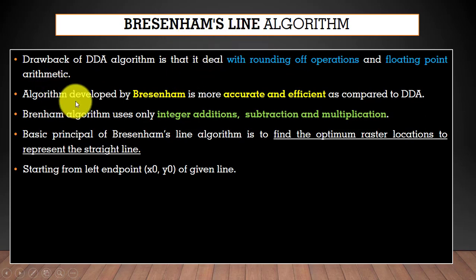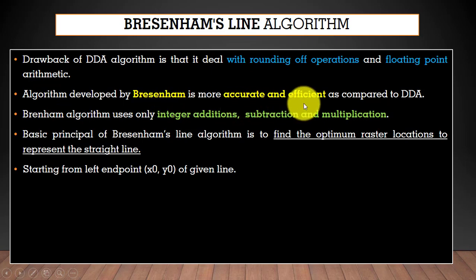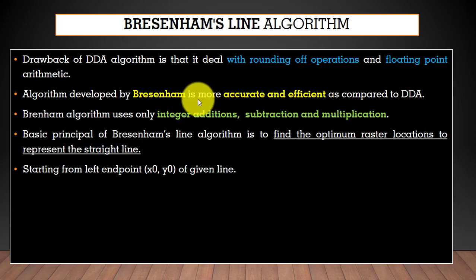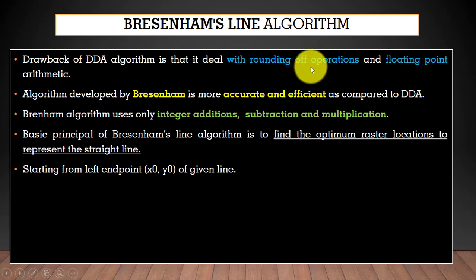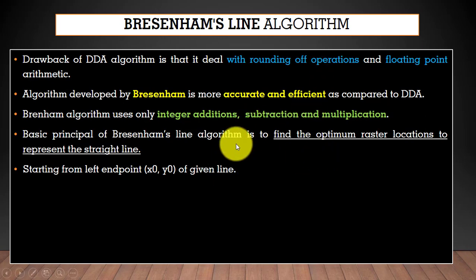Bresenham's line drawing algorithm was developed by Bresenham. This algorithm is more accurate and efficient as compared to DDA because it uses only integer addition, subtraction, and multiplication. There is no need to do any kind of floating point arithmetic or rounding off operations — just simple addition, multiplication, and subtraction. The basic principle of this algorithm is to find the optimum raster location to represent the straight line.